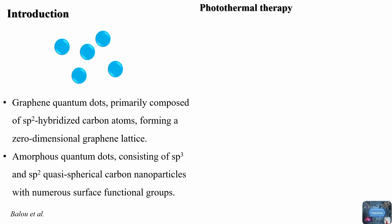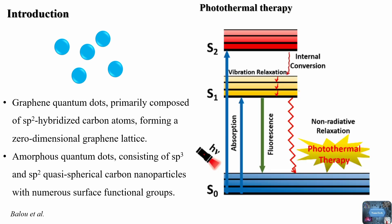Carbon dots possess many loosely bound electrons in their lowest energy state. When they are exposed to the right kind of light, these electrons get excited and move to higher energy states, what's called the excited singlet state. Typically, carbon dots are known for releasing this energy as light, which is called fluorescence. However, they may return from the excited singlet state S1 to the ground state S0 through non-radiative relaxation, resulting in the release of energy in the form of heat.